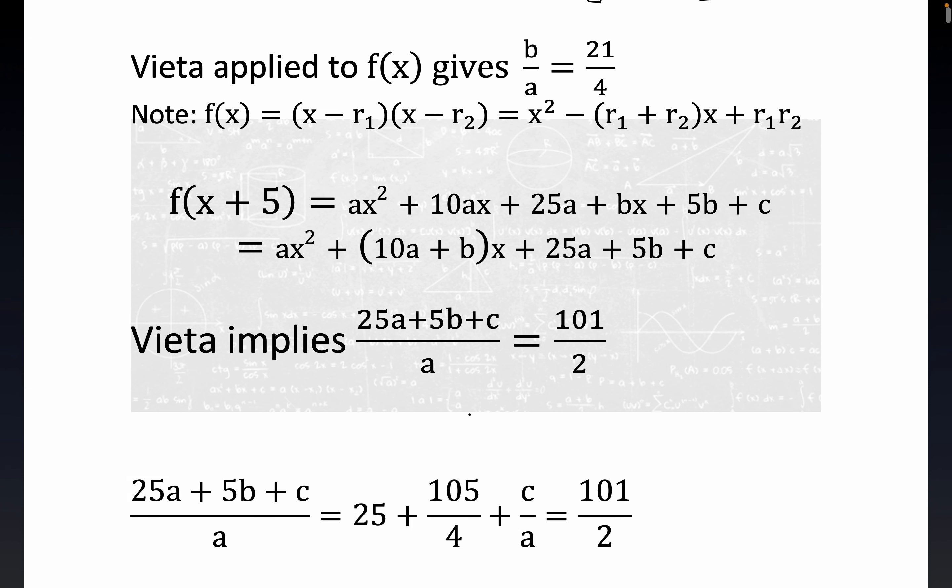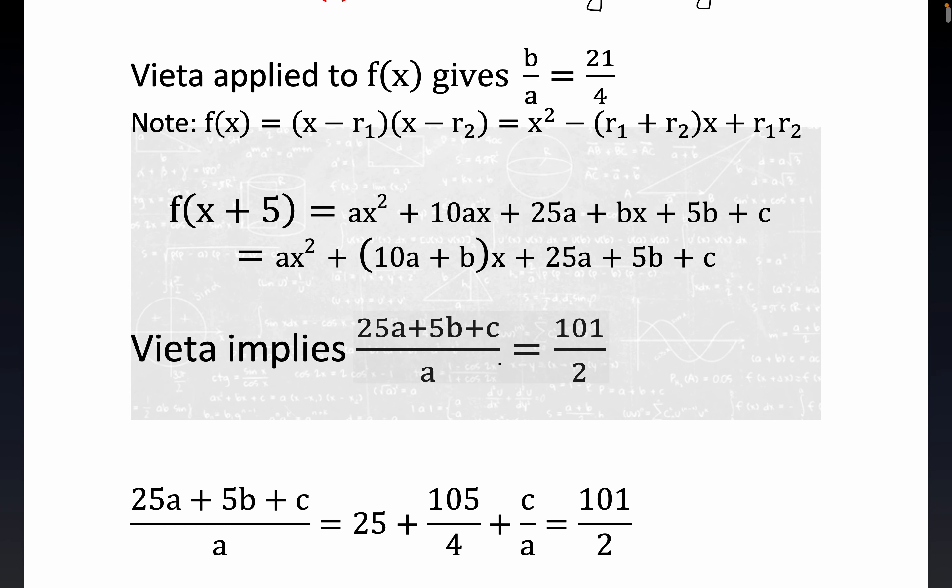Y'all the 105 over four, that's just 25A divided by A is of course 25, right? We're assuming A is not equal to zero. And then five times B over A. Well, B over A is 21 over four.